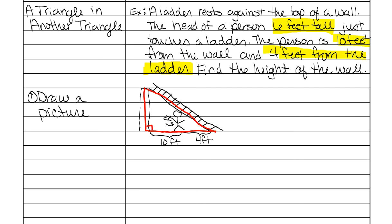It doesn't necessarily always have to make right triangles for similar triangles, but this one does. And then the second littler one that's inside of it is right here. So it's the person to the ladder. So the first thing you're going to want to do is to separate those triangles.